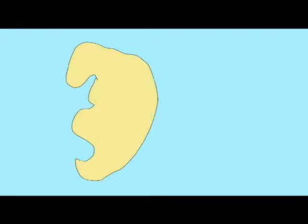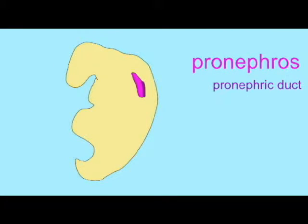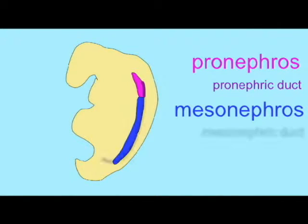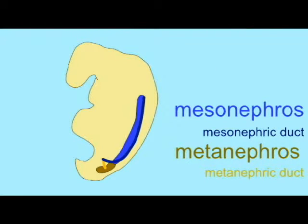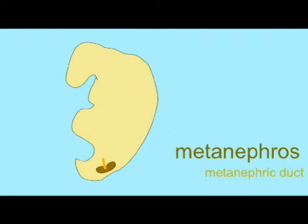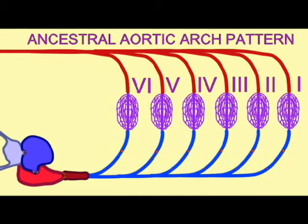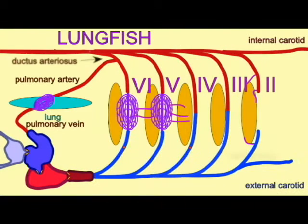If the ancestors of land vertebrates were fish, it then follows that tetrapod embryos may possess some features which we associate with fish, that adult tetrapods no longer possess. If mammals evolved from reptiles, it is possible that mammalian embryos would retain reptilian features which adult mammals no longer possess.